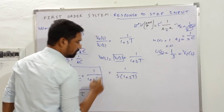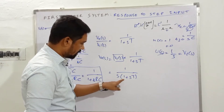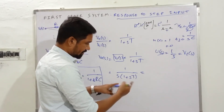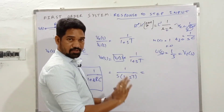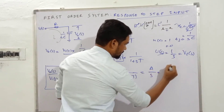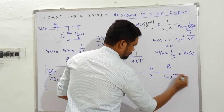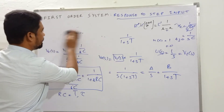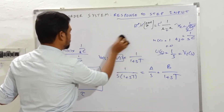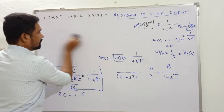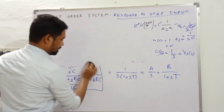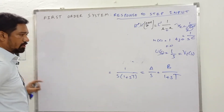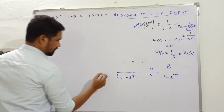We need to split V_out(s) = 1/(s(1 + sT)) into partial fractions. This is a simple pole case — no quadratic expression or repeated poles — so it splits as A/s + B/(1 + sT). We evaluate residues A and B, then take the inverse Laplace transform to get the step response v_out(t) in the time domain.